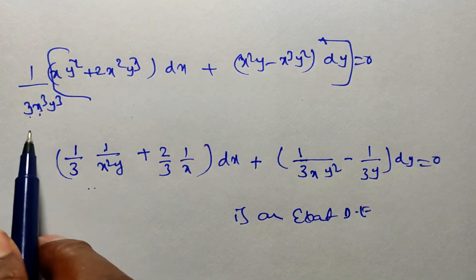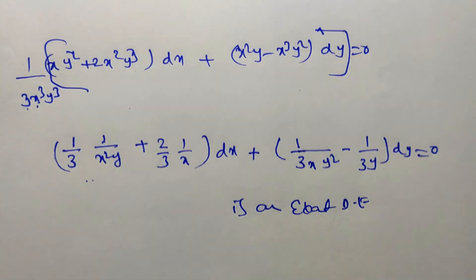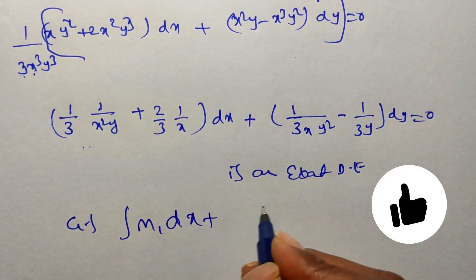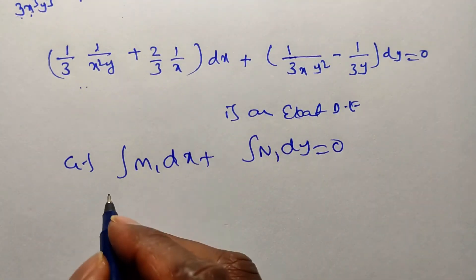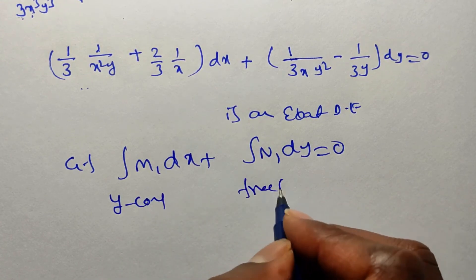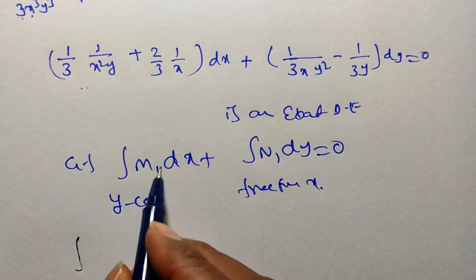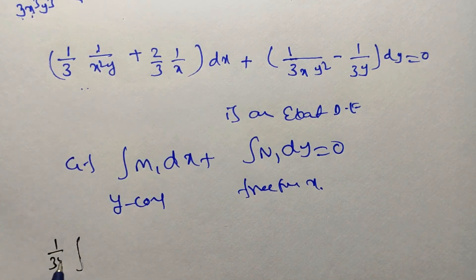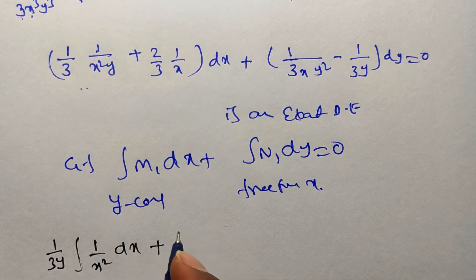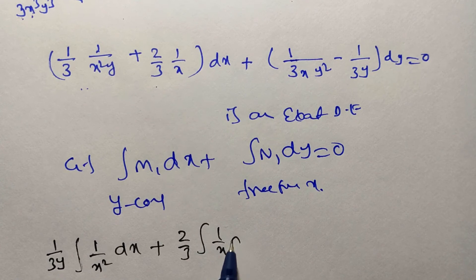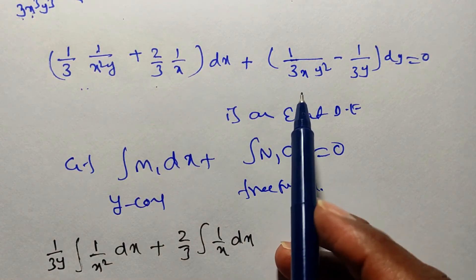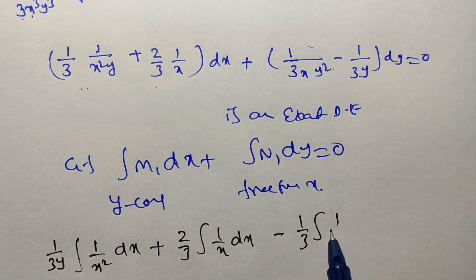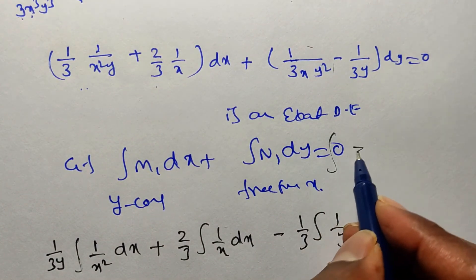For an exact differential equation, the general solution is ∫M₁dx + ∫N₁dy = C, where in the second integral we take only terms free from x. Integrating M₁ with respect to x: (1/3y)∫(1/x²)dx + (2/3)∫(1/x)dx. The term −1/(3y) in N₁ is free from x, so we also integrate: −(1/3)∫(1/y)dy = C.